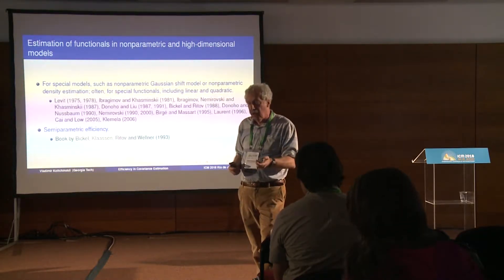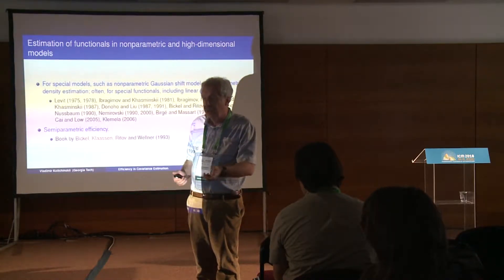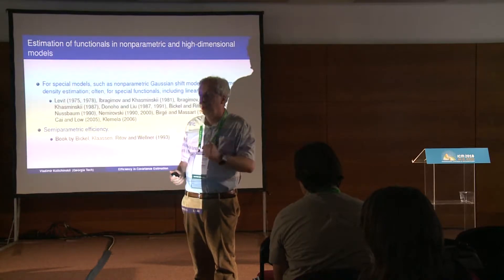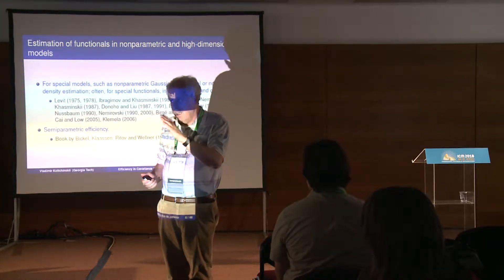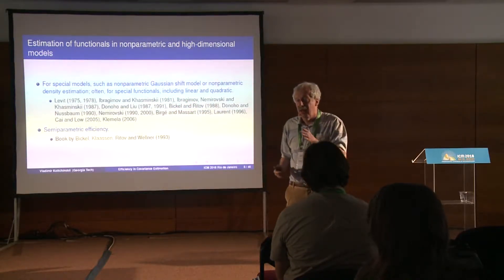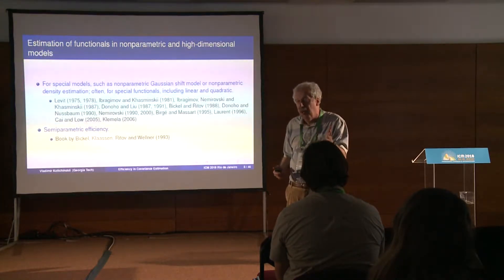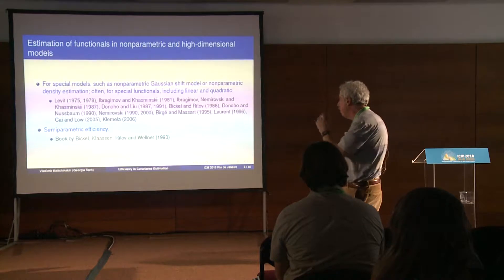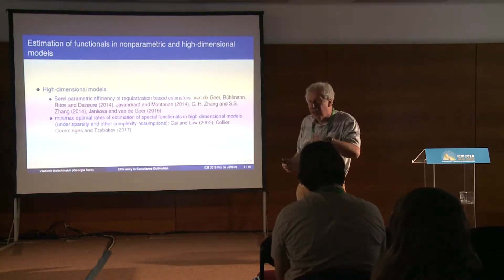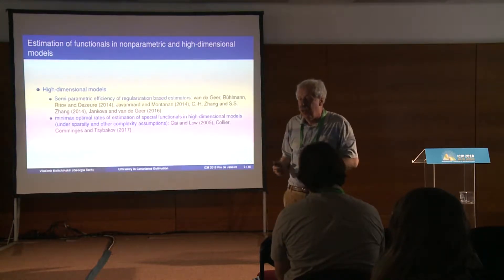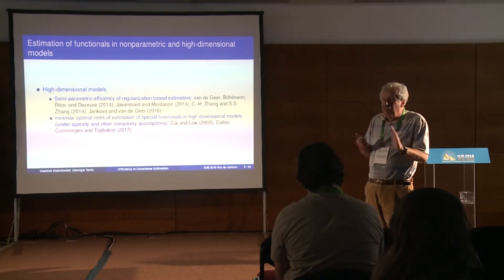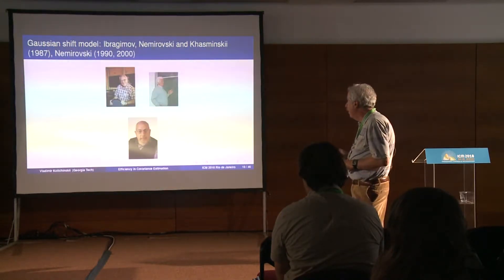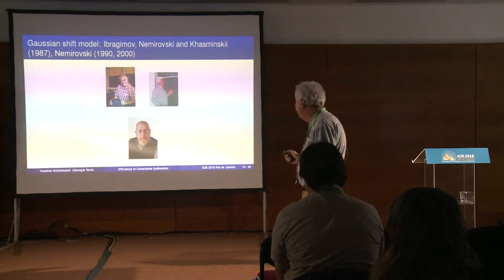When dimension is allowed to grow, fairly often you lose the square root of n rate — even for simple functionals you can lose the rate. You need to figure out what the optimal rate is going to be. Even if the square root of n rate is attainable, the construction of an efficient estimator is completely non-trivial. Rather rarely would you just plug in the maximum likelihood to get an asymptotically efficient estimator. This problem has been studied over the years first in nonparametric settings, and more recently there are attempts to move in this direction in high-dimensional models.